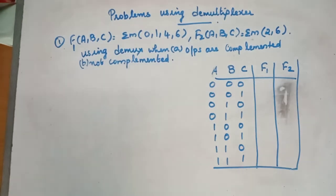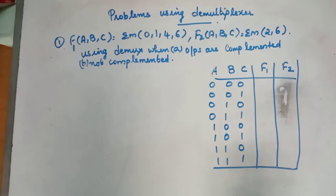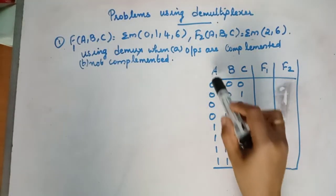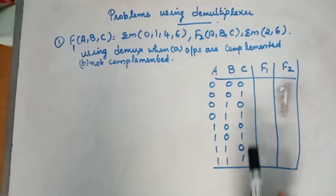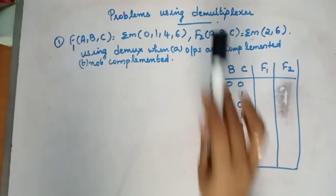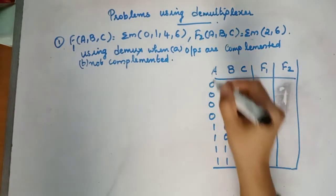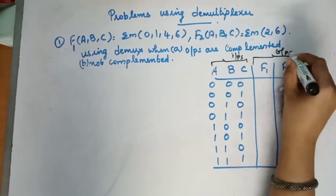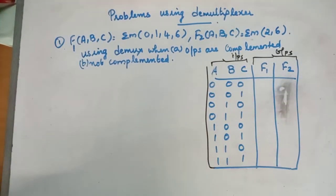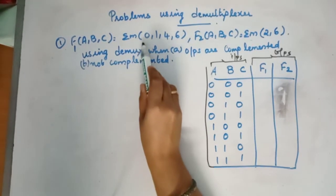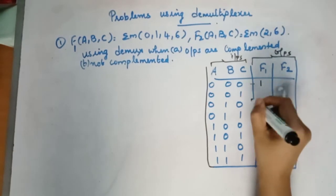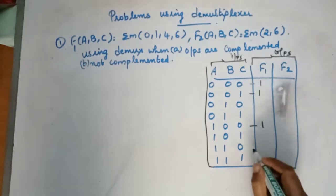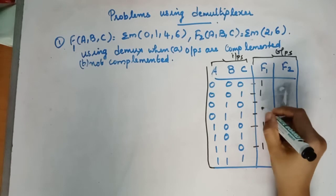First we will analyze the question. There are two functions, both functions of ABC. So ABC is naturally the input. We write the truth table from whatever is given. ABC are the inputs, written from 0 to 7, and we have two outputs F1 and F2. F1 is 1 when the input is 0, 1, 4, and 6. In all other cases, F1 is 0.